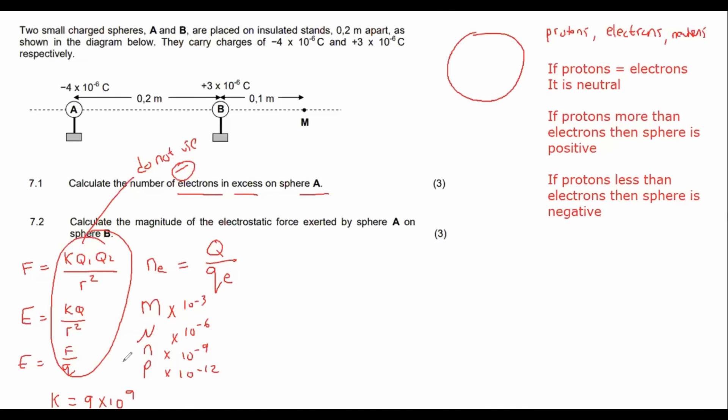So what we know is that we know that calculate the number of electrons in excess on sphere A. So we can see that this thing has a negative charge. So that means that it's because it's got more electrons or the protons are less than the electrons. So they want to know how many extra electrons does it have. And so that's going to be using this formula over here, which we, some of us haven't used since grade 10. The chances you get something like this is very small, but it can happen. So the number of electrons, which is what that stands for.